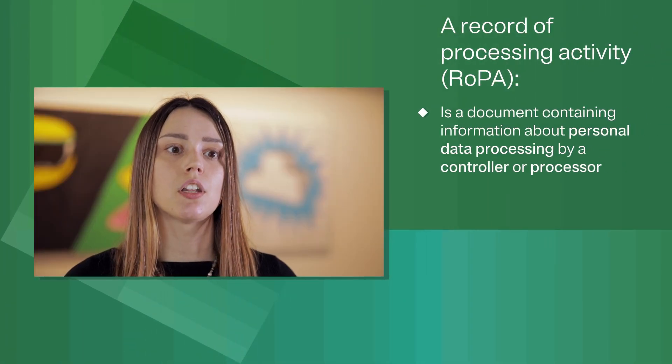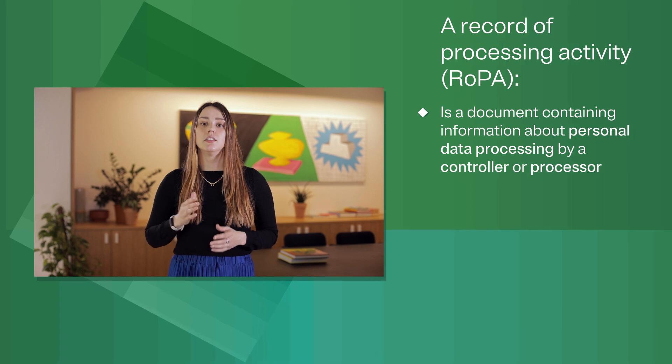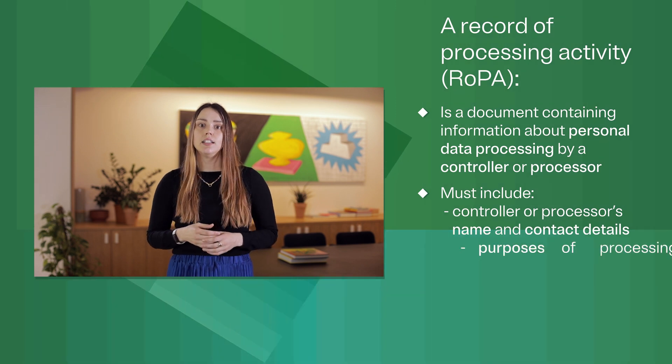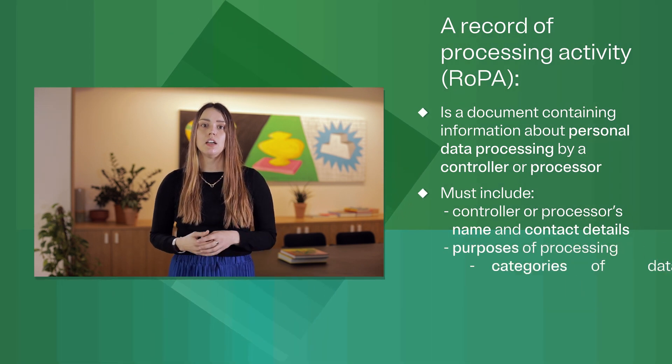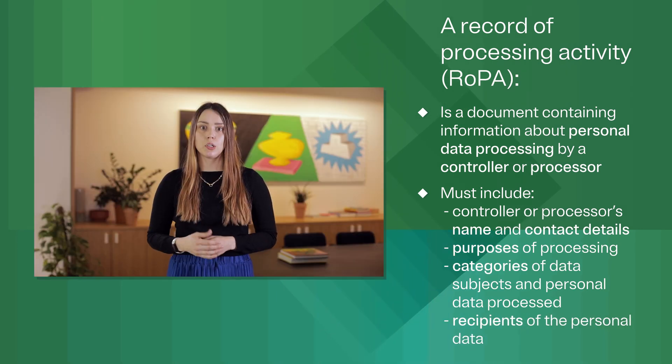Let's start with a look at what is a record of processing activity, also known as ROPA. Under the GDPR, a record of processing activity is a document containing information about the personal data processing by a controller or a processor. The record must include details such as the name and contact details of the controller or processor entity, the purposes of the processing activity, the categories of data subjects and the personal data being processed, and the recipients of that personal data. The record of processing activity serves as your evidence of compliance with the GDPR, and it helps your business ensure that transparency and accountability is maintained when processing personal data.